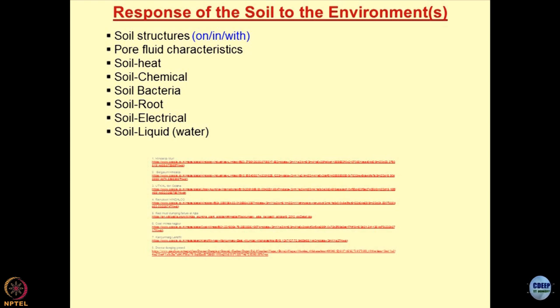Soil-root interaction — stabilization of soil based on vegetation is picking up and is being done at several places. In my consulting work, I have used this concept of soil-root interaction at different tailing ponds in the country, where I have recommended vetiver grass. Vetiver grows very fast and the roots penetrate through the soils. You can grow it on the slopes of embankments. The root acts as a reinforcement and holds the soils — it is a good example of how soil-root interaction occurs.